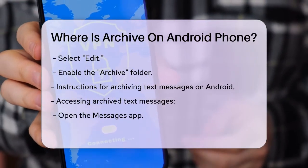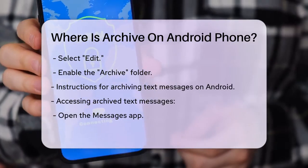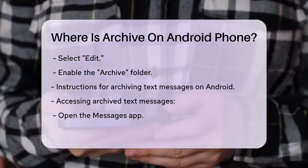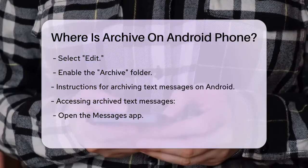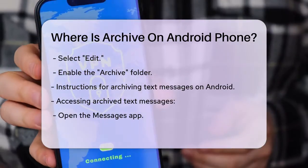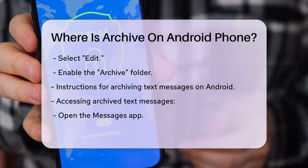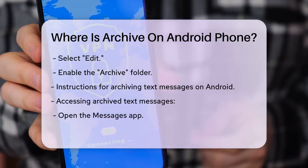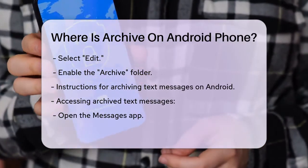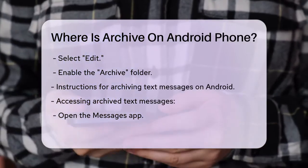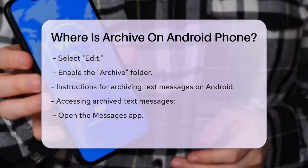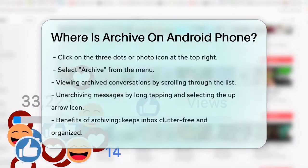Now let's talk about text messages. If you've archived text messages on your Android device, finding them is relatively easy. Open your Messages app, which you can usually find on your home screen or in your app drawer. Once open, click on the three dots or the photo icon at the top right corner, and then select Archive from the menu.